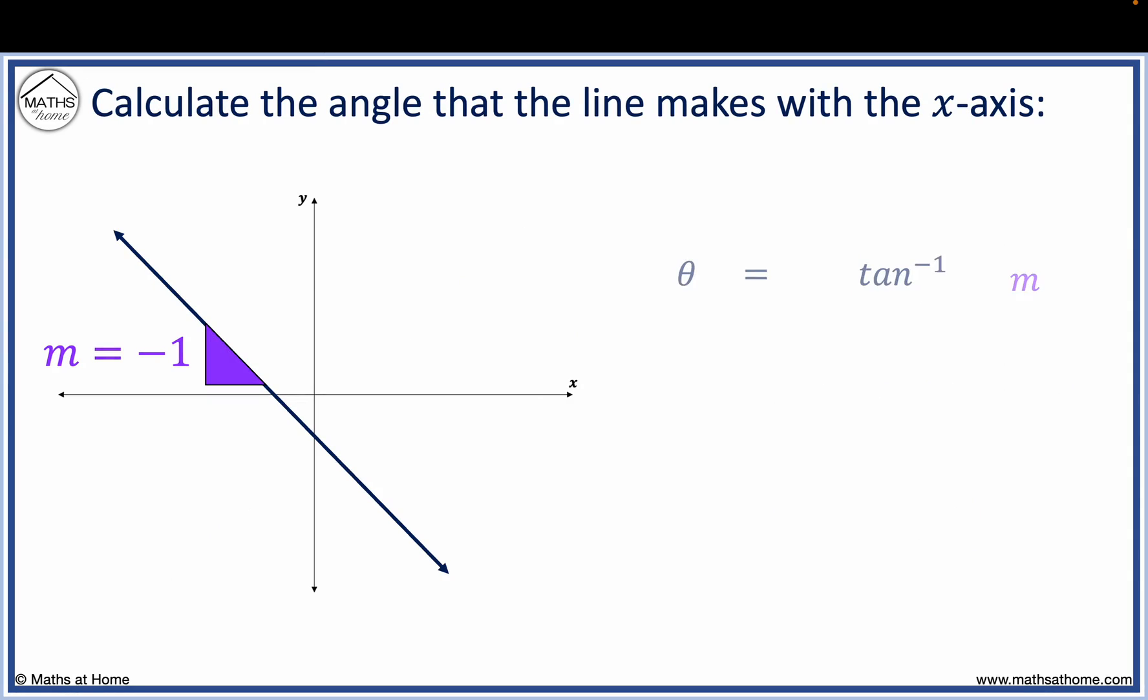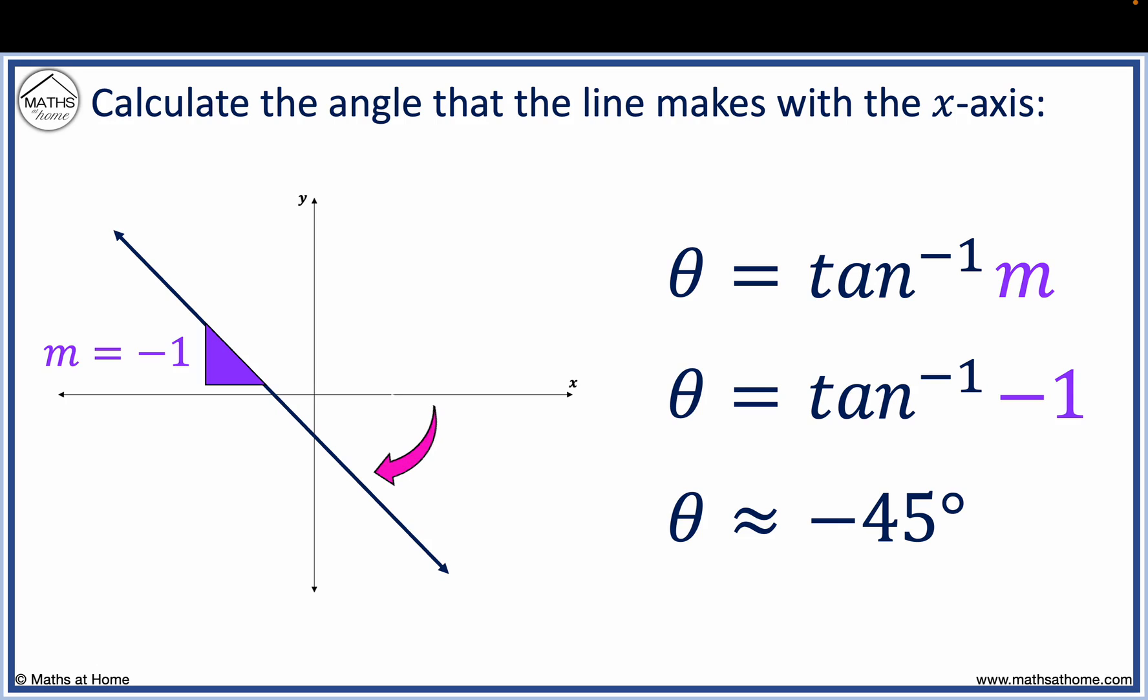Again we use inverse tan of m. m equals minus 1. Evaluating inverse tan of minus 1, we obtain theta equals minus 45 degrees. This negative angle means that the 45 degree angle is from the clockwise direction as shown.